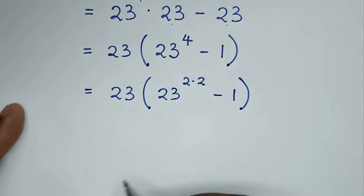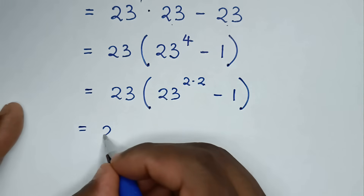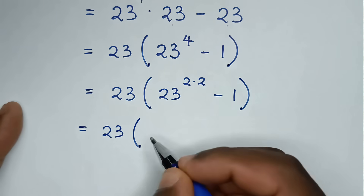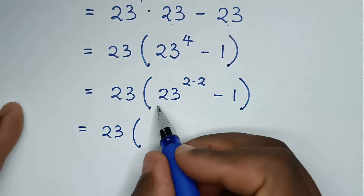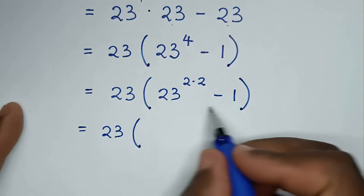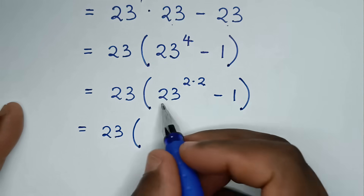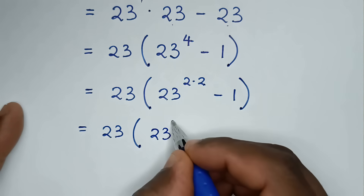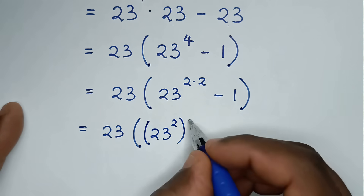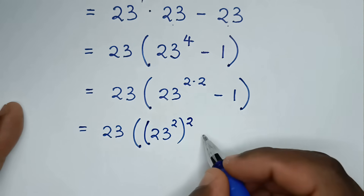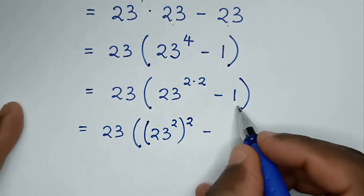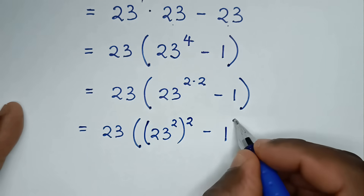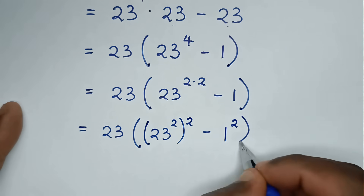Then it will be equal to 23 bracket, and by the difference of two squares we have 23 squared bracket squared, then minus 1, which is the same as 1 squared, bracket.